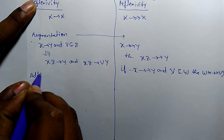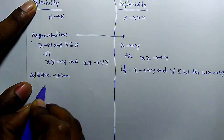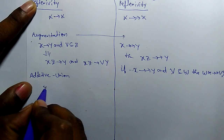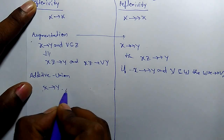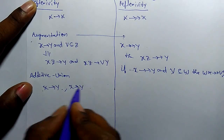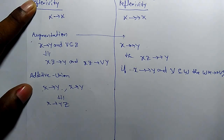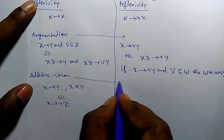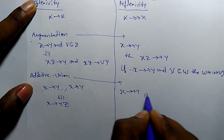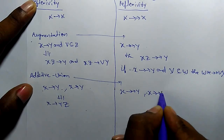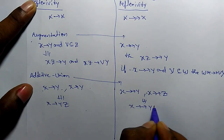Next is the additivity rule, also known as the union rule. In functional dependency, if X determines Y and X determines Z, then X determines YZ. Similarly, in multivalue dependency, if X multivalue determines Y and X multivalue determines Z, then X also multivalue determines YZ.